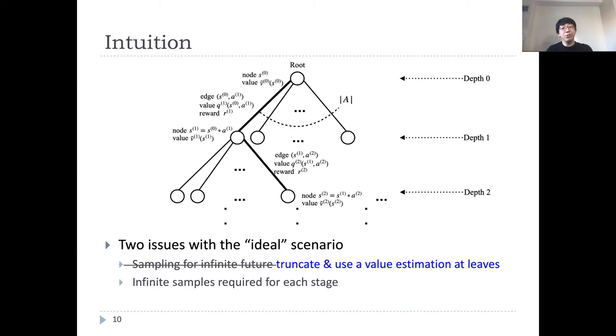We need to address these two issues to obtain a practical algorithm. Naturally, for the first issue, we truncate the process at some depth H. Since we want to simulate the future after depth H, we use a value function estimation to estimate the value of the leaf nodes. To address the second issue, we must be smarter about which action to sample at each stage, instead of uniformly sample every action.